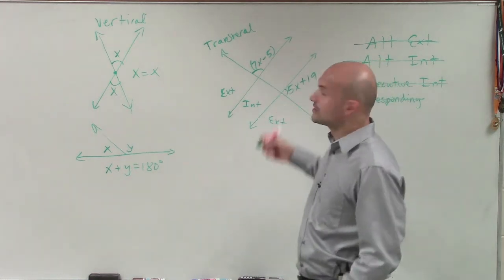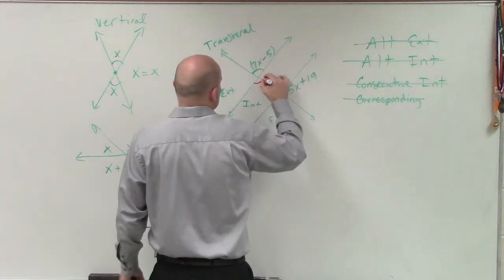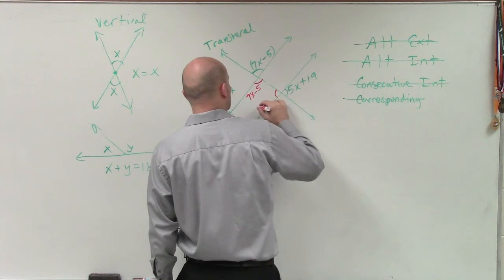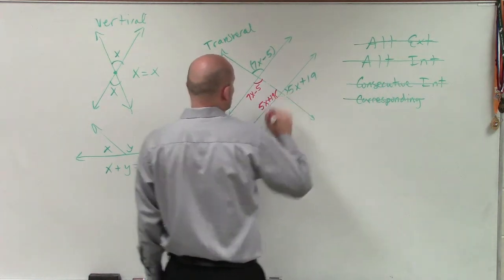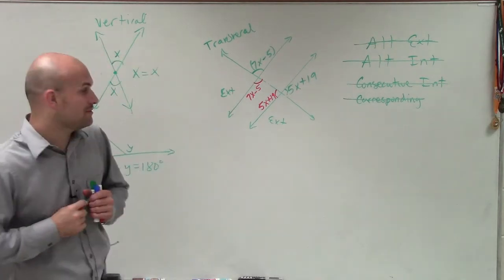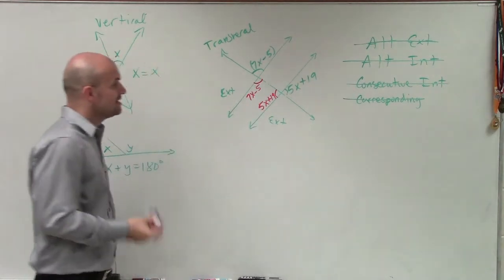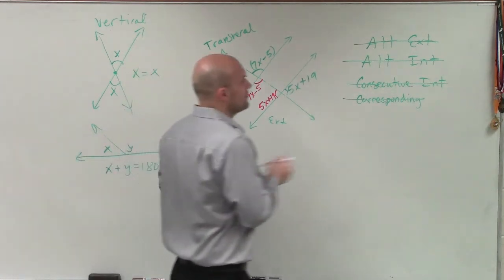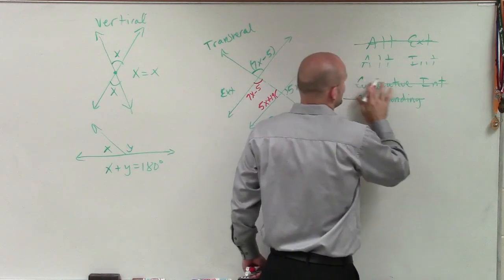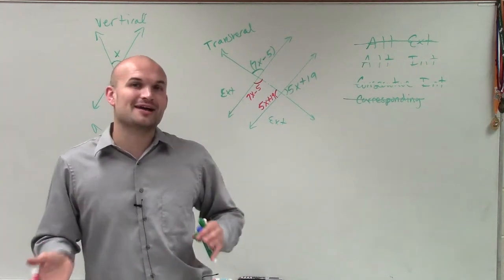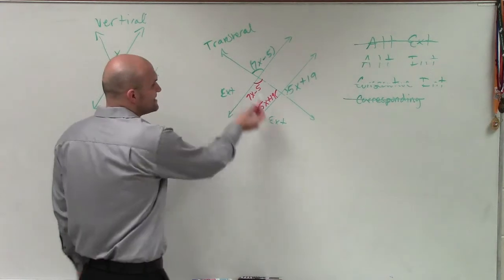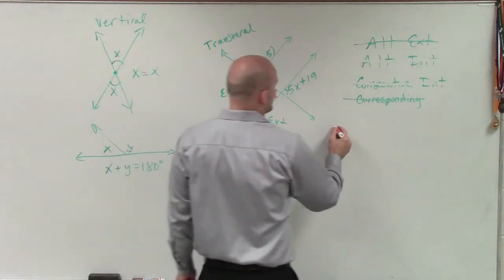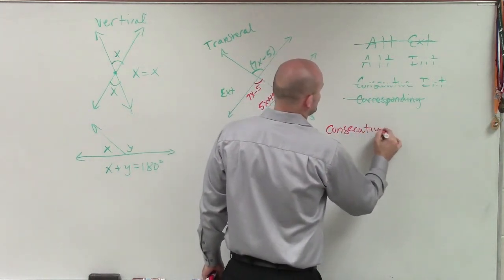Even though these two angles aren't a linear pair, I can use the definition of vertical angles to say that this angle has a value of 7x minus 5, and this angle has a measure of 5x plus 19. Since those vertical angles are equal in measure, I can now look at these and go back to my definitions. Now I have two angles that are interior — between the two lines we're trying to prove parallel. These two angles are what we call consecutive interior angles.